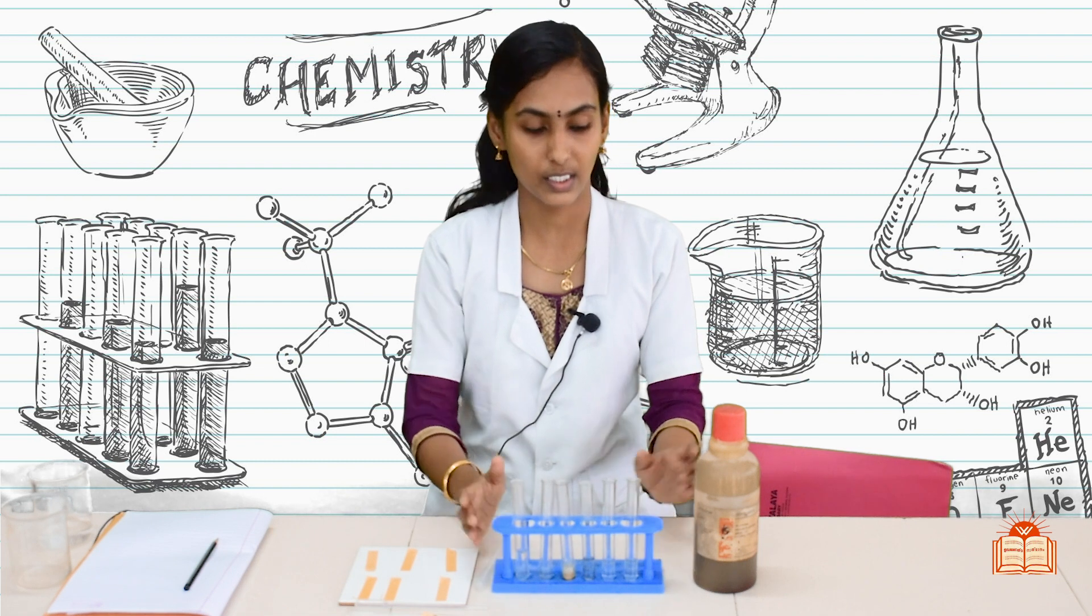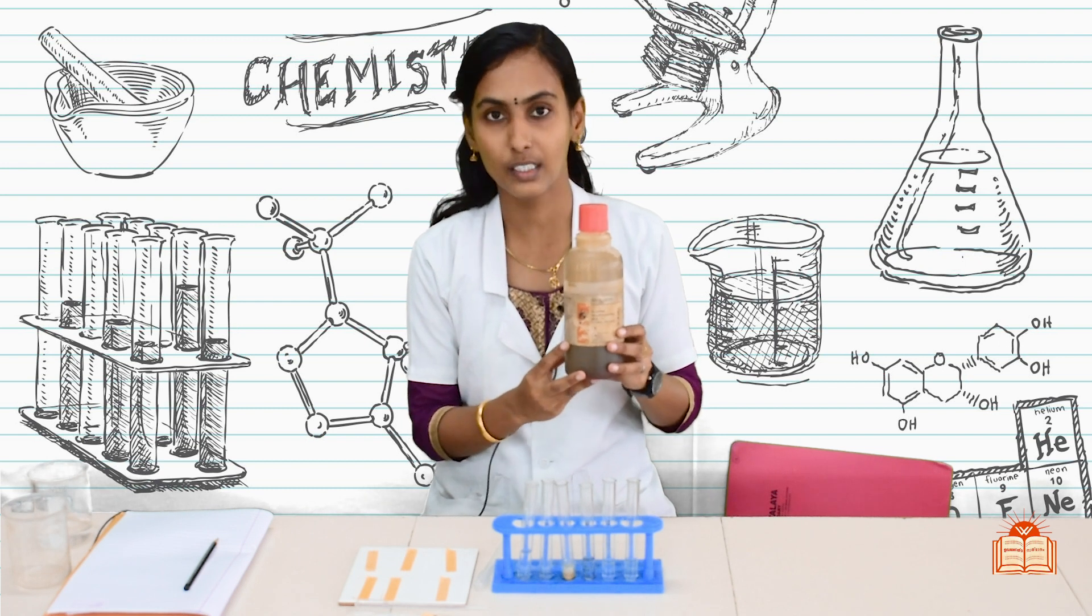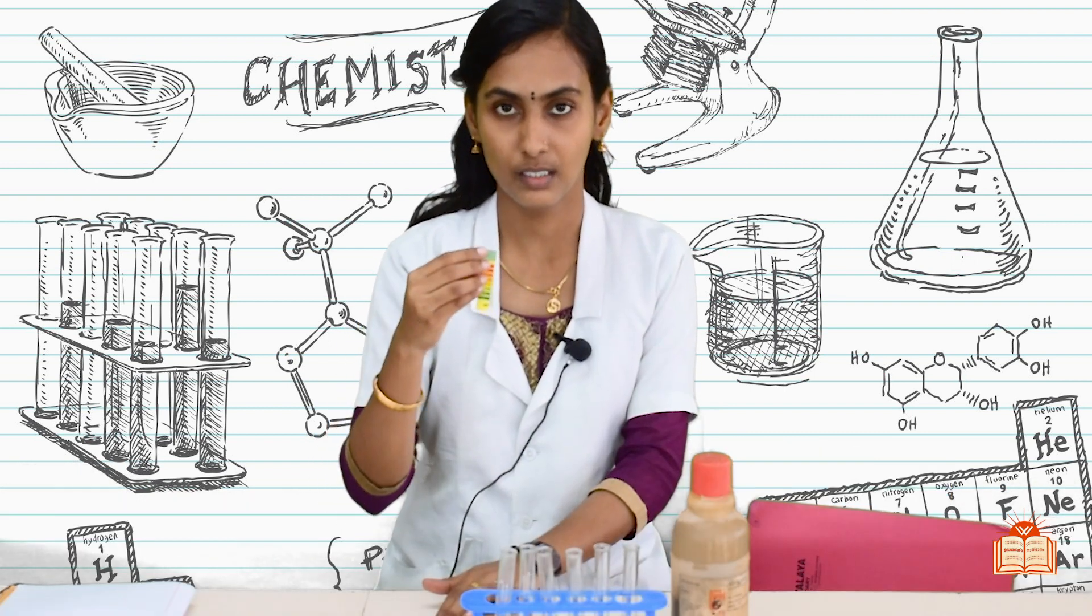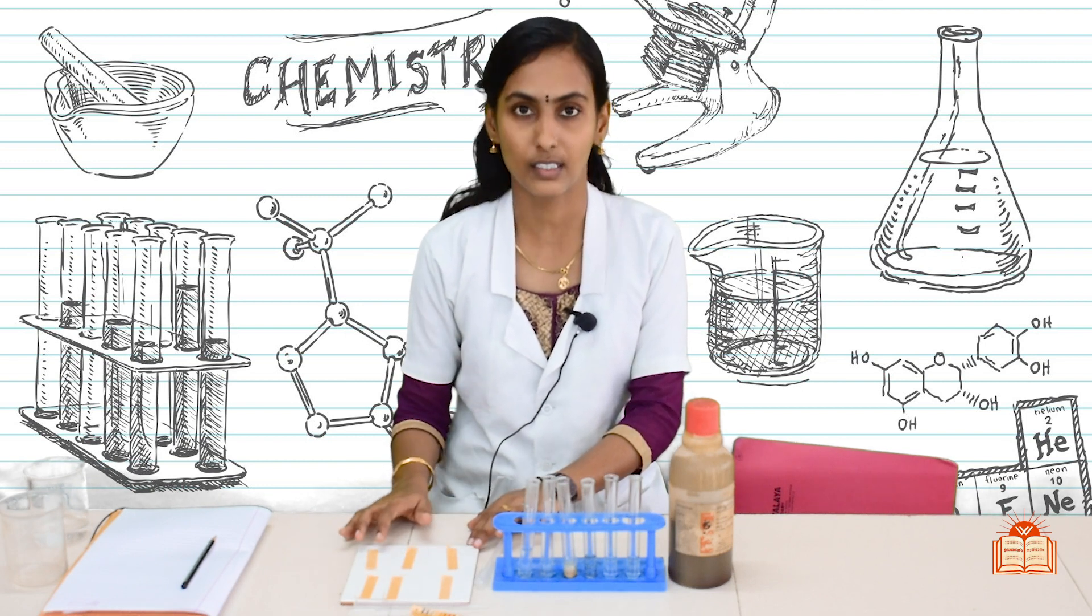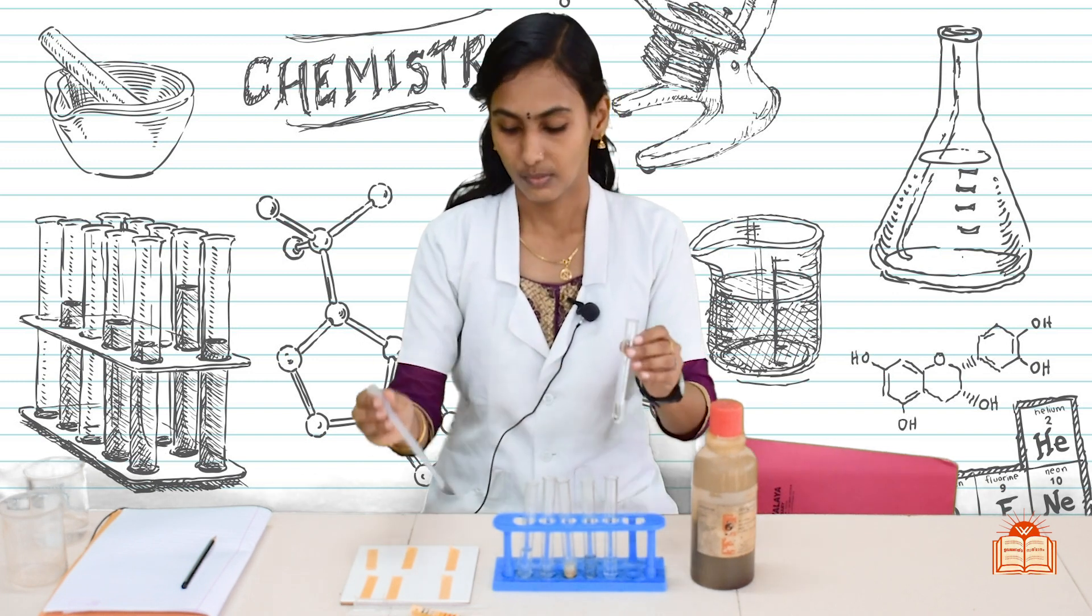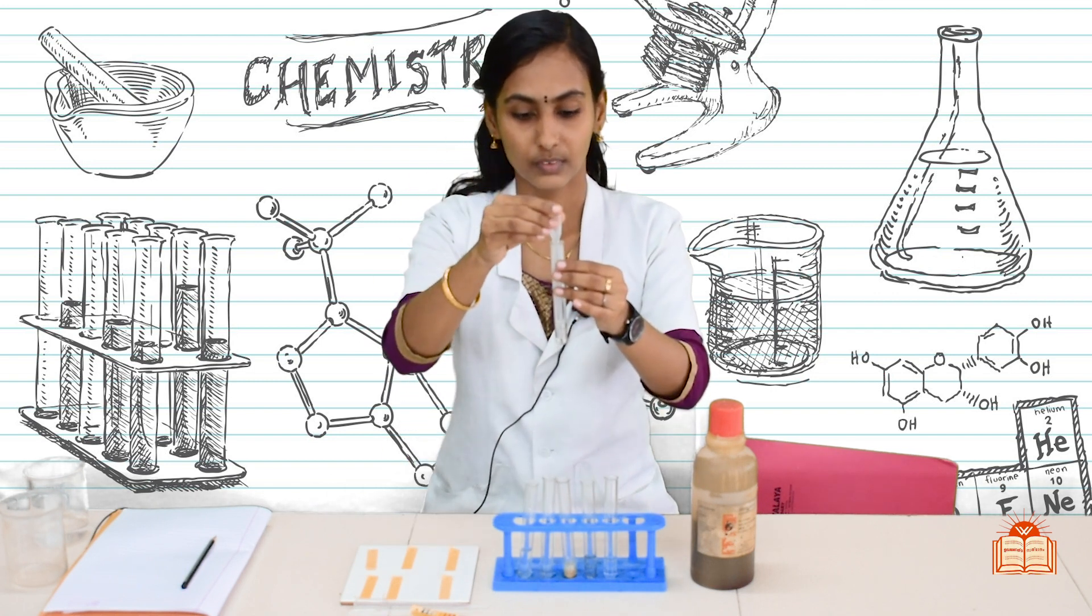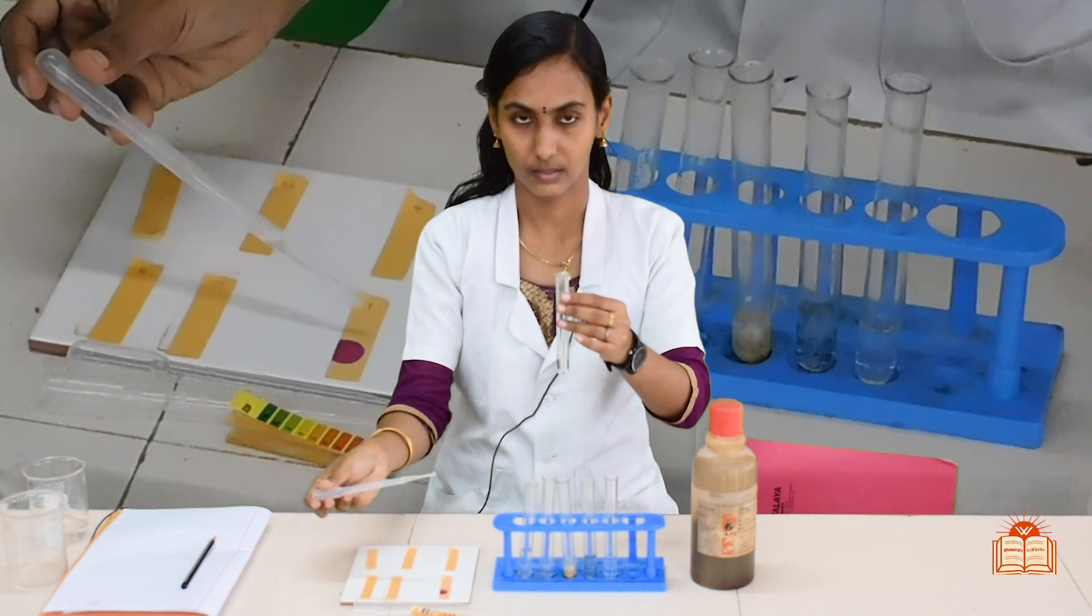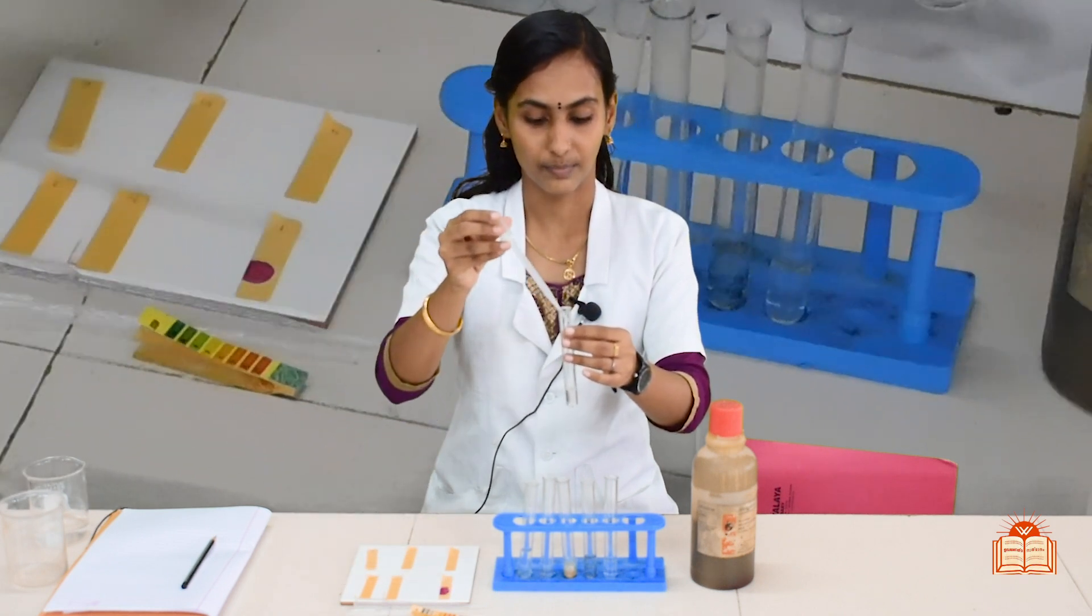Here we have pH paper which will be used to identify the nature of the substances. Six strips of paper are taken and marked as 1, 2, 3, 4, 5, 6. Now using this dropper, we will add the solution one by one to the pH paper. Let us see, first one, dilute HCl solution, add some drops to the pH paper. Can you see the color? It turns to dark pink color.